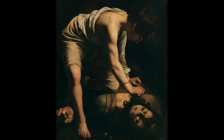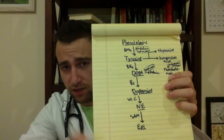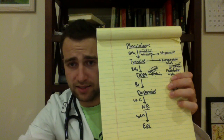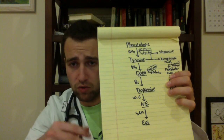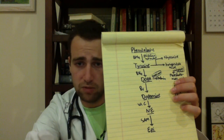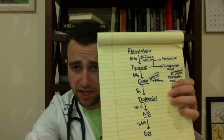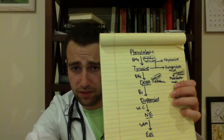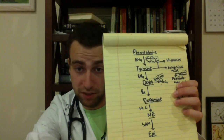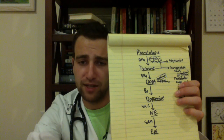Now on to the Goliath for today — the catecholamine pathway. We start with phenylalanine at the top. Using BH4, we turn that into tyrosine. Tyrosine can become thyroxine, or it can become homogentisic acid, which has its own pathway. Or we can use BH4 again to turn it into dopa. Dopa can become melanin, or we can use B6 to turn it into dopamine. Dopamine will use vitamin C to become norepinephrine. Norepinephrine will use SAM to become epinephrine.